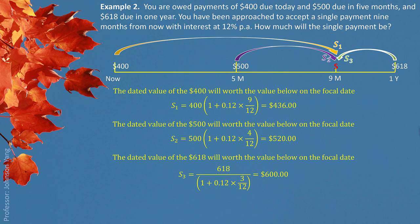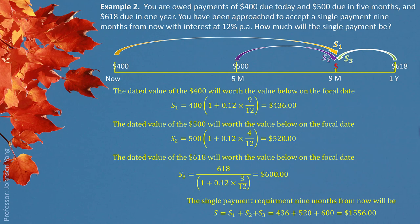When we look at value change from left to right, you are moving from past to future. When you look at the flow from right to left, you are moving from future to past. Putting the three amounts together, the single payment would be $1,556.